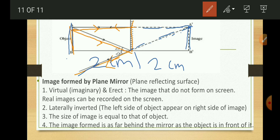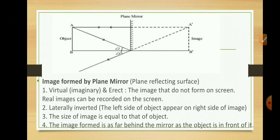The image formed by a plane mirror is also laterally inverted — if you raise your left hand in front of the mirror, it appears as the right hand of your image. Plane mirrors are commonly used as looking glasses for grooming, and also in making periscopes used by sailors and submarines to see over or around obstacles. Plane mirrors are also used in kaleidoscopes. I hope you understood all the basic terms related to light, properties of light, and reflection. In the next video we will learn about spherical mirrors. Thank you and have a nice day.